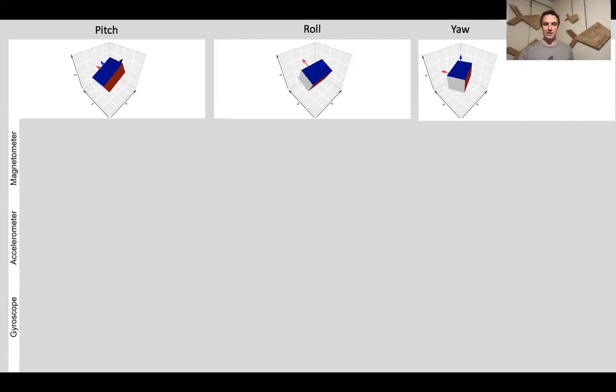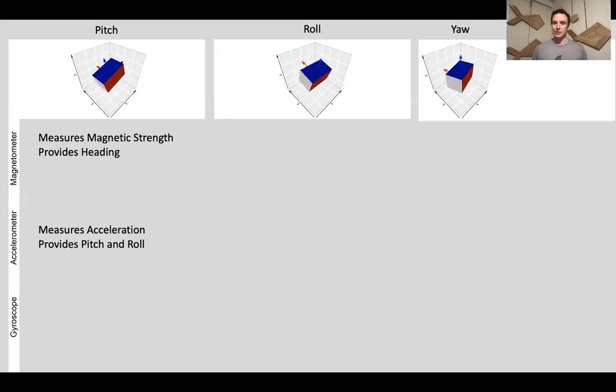You have a magnetometer, which measures the Earth's magnetic field strength primarily, and this provides information on yaw or heading. You have an accelerometer, which measures acceleration, and in the context of orientation, we're really talking about acceleration due to gravity. This is a vector that points straight down to the core of the Earth, and this provides information on pitch and roll of the object.